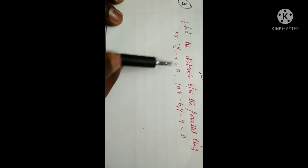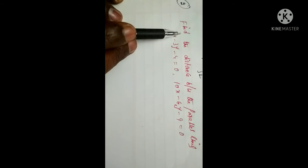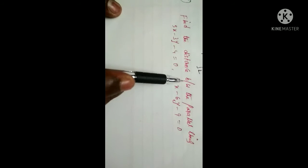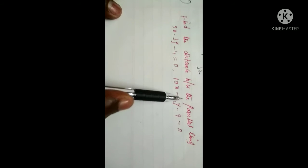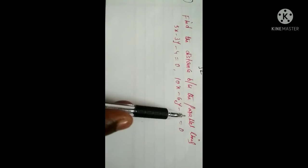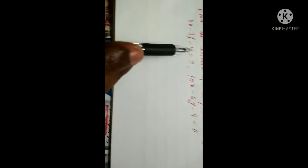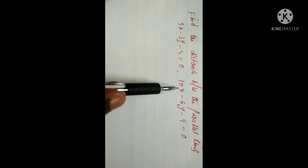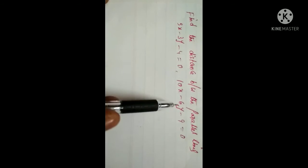Next, find the distance between the parallel lines 5x minus 3y minus 4 equal to 0 and 10x minus 6y minus 9 equal to 0.